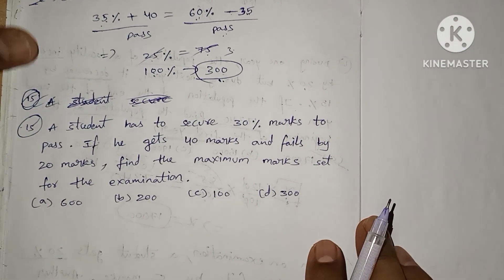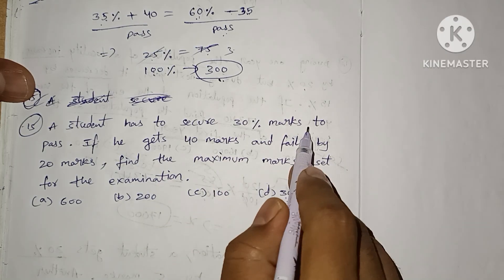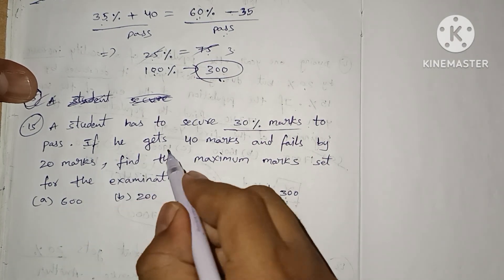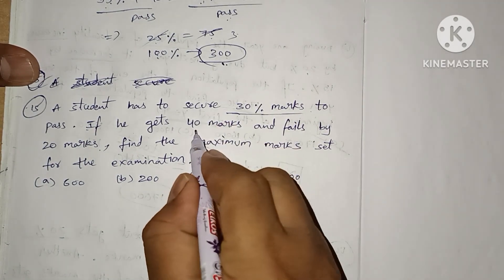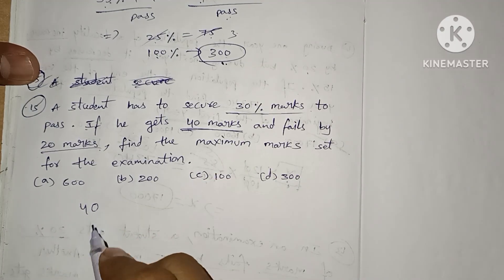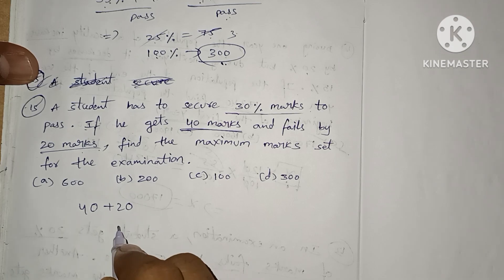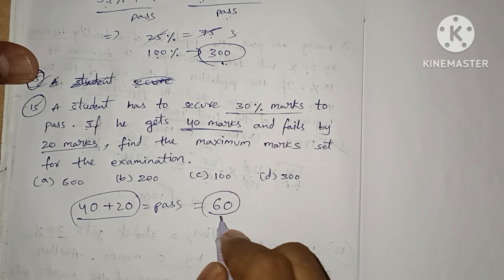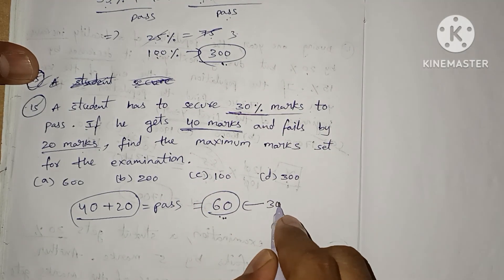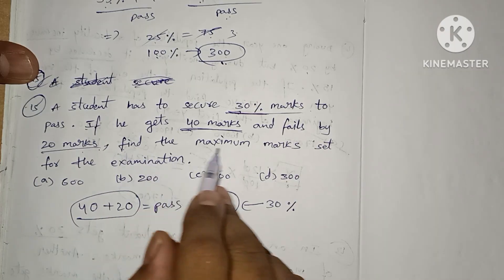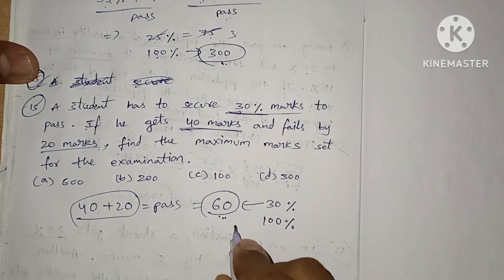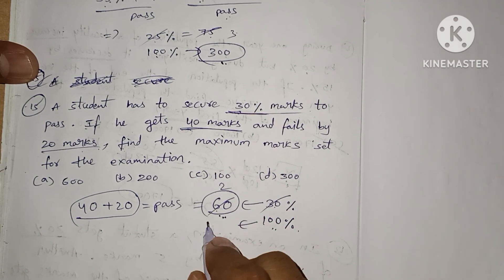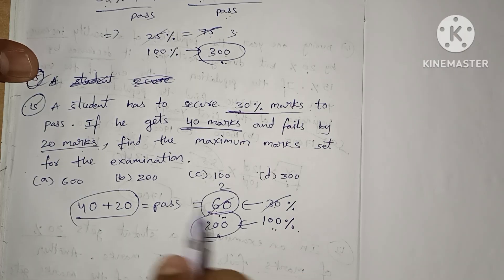Final question: a student has to secure 30 percent marks to pass. If he gets 40 marks and fails by 20 marks, then pass marks = 40 + 20 = 60. Since 60 marks equals 30 percent, we find 100 percent: 30% = 60, so 100% = 200. The maximum marks set for the examination is 200 — option B is our answer.